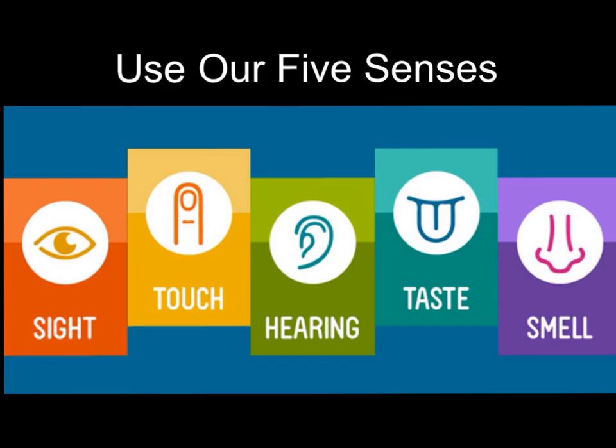To identify our observable physical properties of matter, we have to use our five senses. We are not going to use any other special tools, just what we've got. We are going to use our sight, especially our touch, sometimes hearing, definitely tasting — but only when it's safe and we're told we can — and our sense of smell.